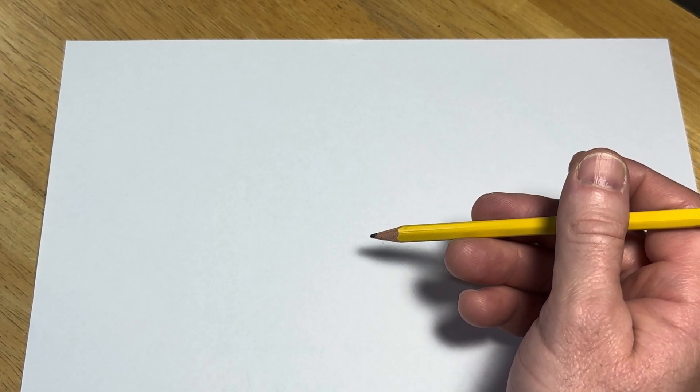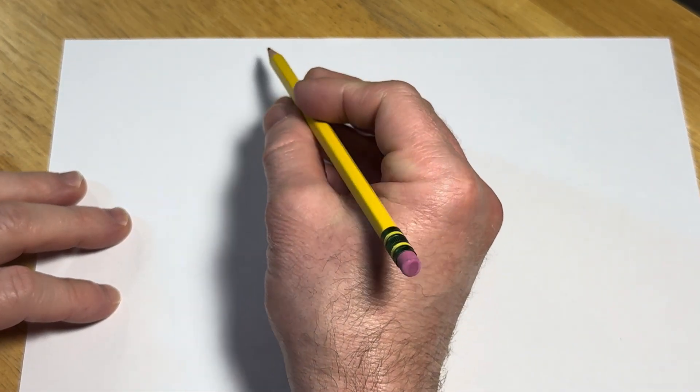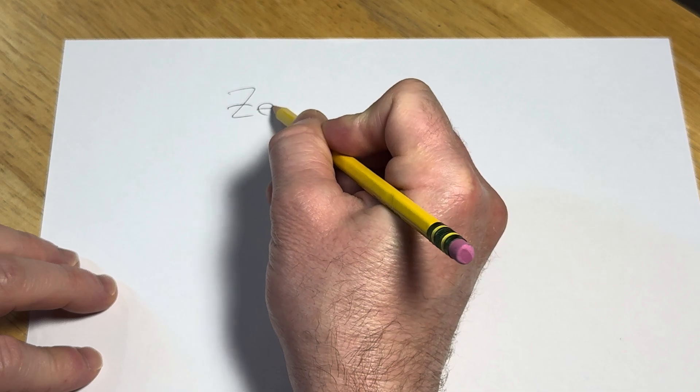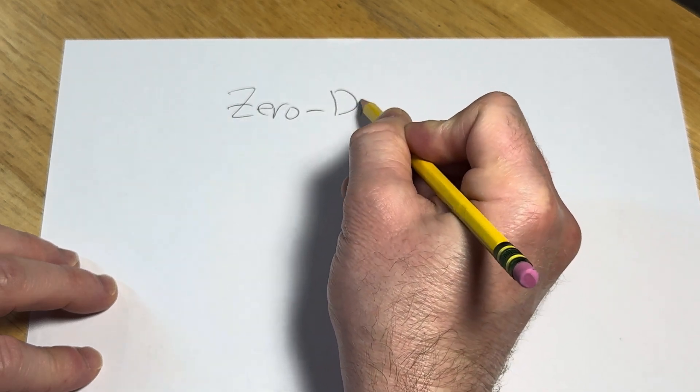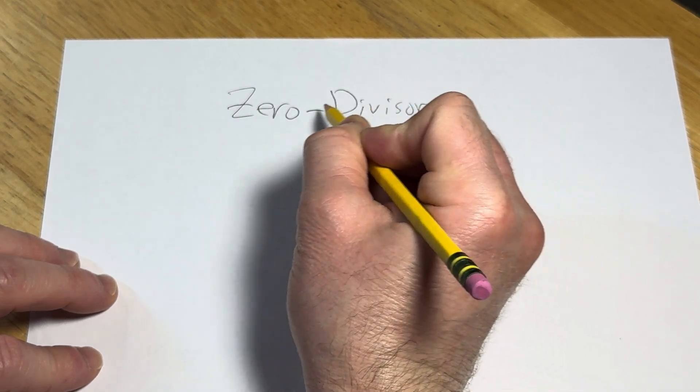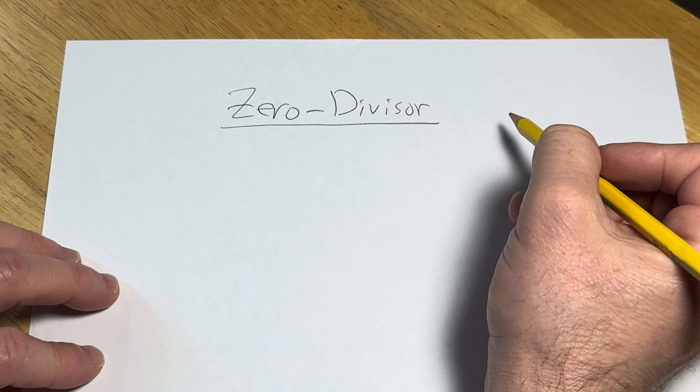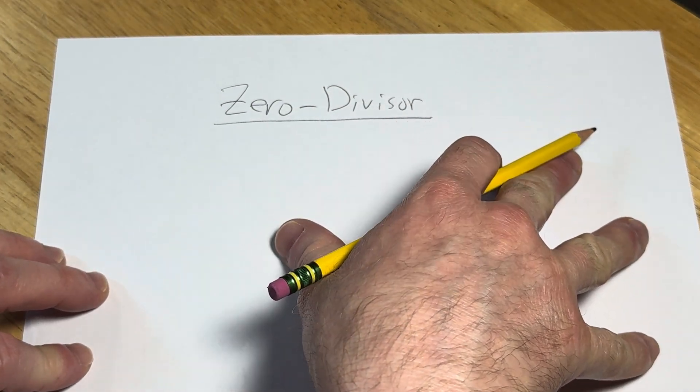Hi, in this video we're just simply going to define zero divisors. Let's talk about this definition. And we're also going to talk about variants of this definition because I've seen different variants in different books.